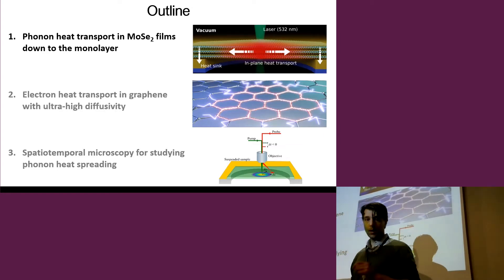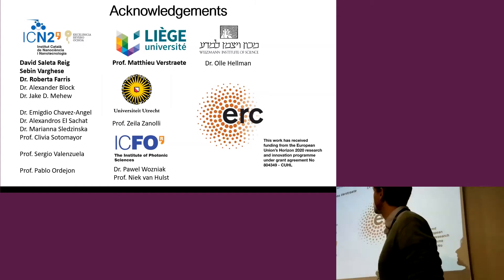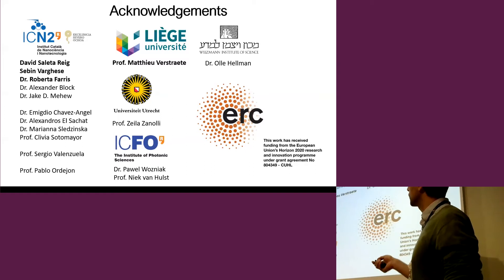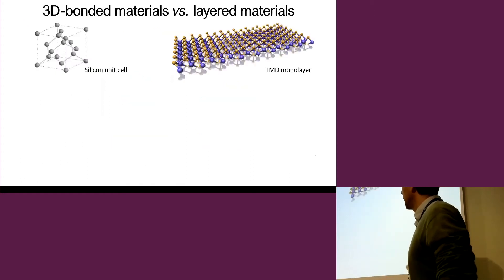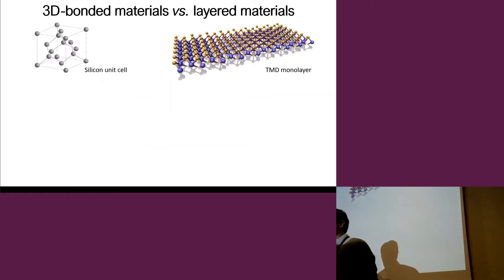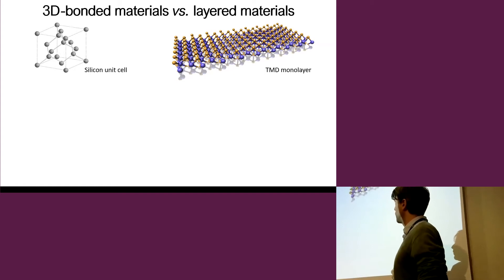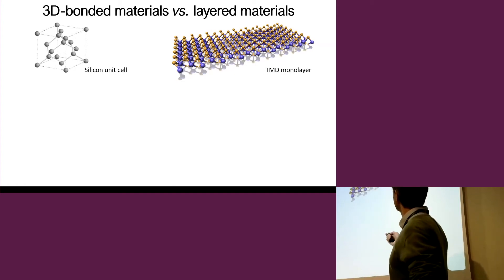Let me start with the first topic. I want to acknowledge my co-workers at ICN2 — people in my group and in the groups of Clivia, Sergio, and Pablo — as well as theory support from Macho and Zela, people from ICFO, and one person from Israel. The idea is to study what happens in 2D materials and how heat transport is different from 3D bonded materials. We want to compare what happens in a 3D bonded silicon system versus a TMD transition metal dichalcogenide like MoS2.